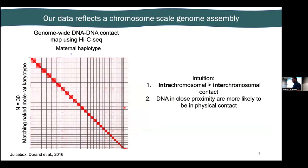These plots are a genome-wide Hi-C contact map. Hi-C is genome-wide DNA-DNA contact mapping that can show how well your assembly has been constructed, because intrachromosomal DNA tends to interact much more than interchromosomal DNA. We get these boxes representing each chromosome — we have 30, which matches the naked mole rat karyotype — and we see heat along the diagonal, so at a very surface level this looks good.